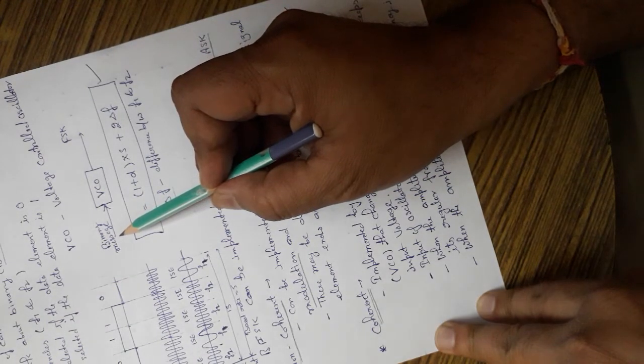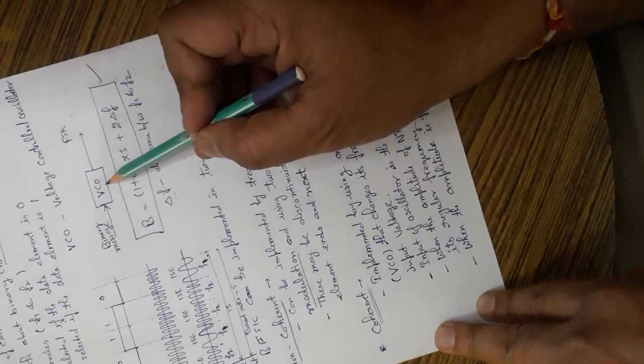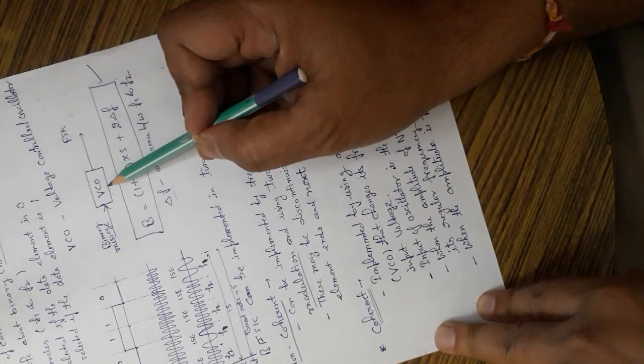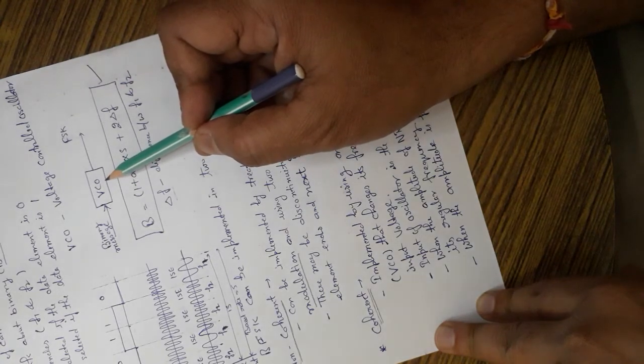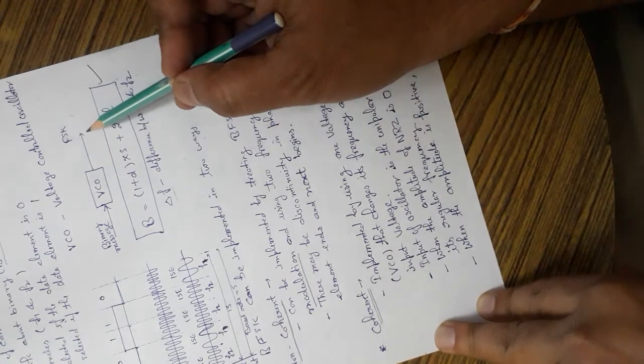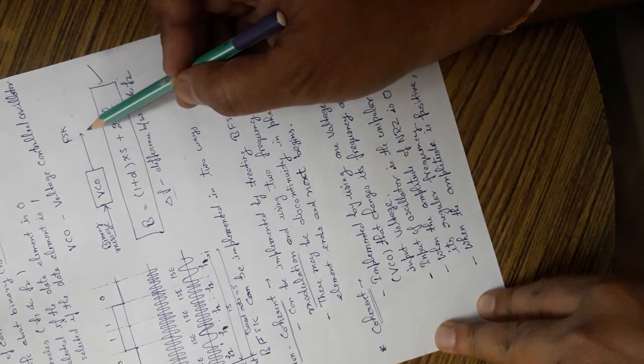If it is 1, the voltage will increase, that will increase the frequency of the oscillator. And a new frequency, that is F2, we will get at the output.